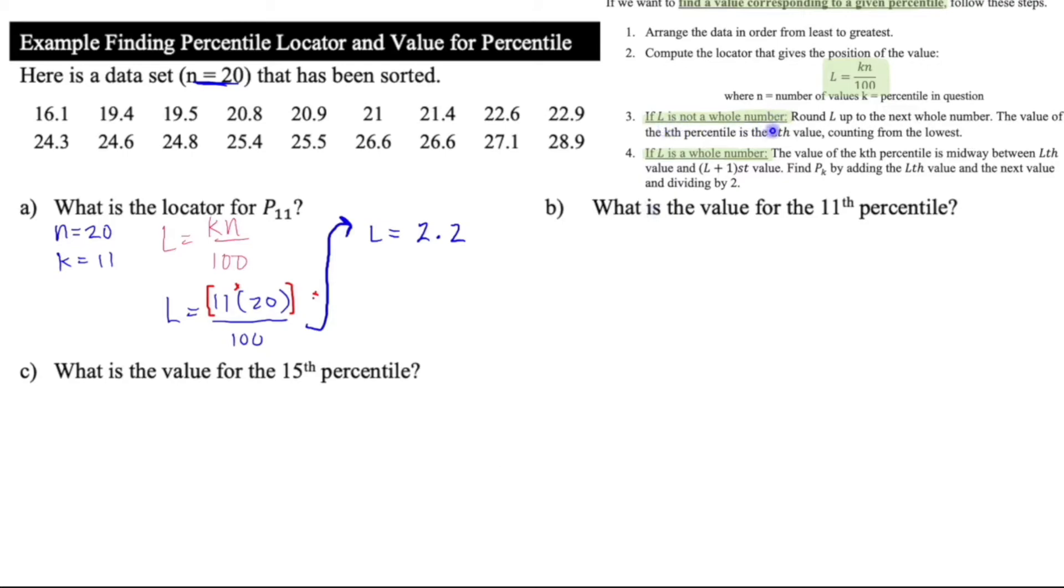So we have the case where it's not a whole number, which means we need to round up to the next whole number and the value of the kth percentile. So the thing we're looking for here will be the Lth value counting from the lowest.